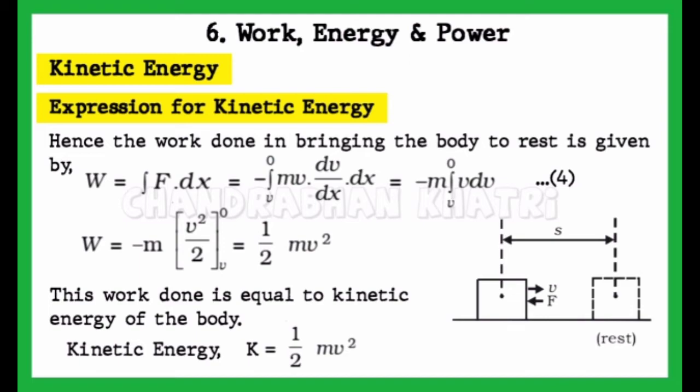After integrating, we get W = -m[v²/2] from 0 to v. After replacing the values of the limits, we get W = ½mv².